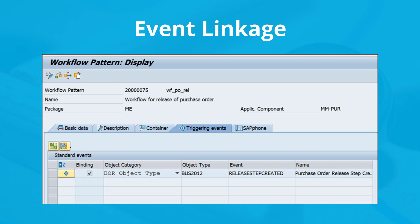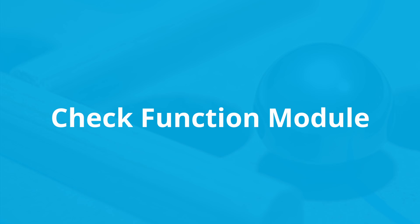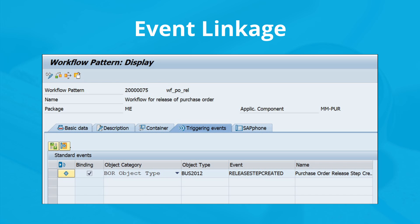This figure shows the event linkage between the workflow and the business object event. If you want to add a custom check to decide whether the workflow should trigger or not, you can use the Check Function Module field. To determine the workflow template dynamically, you can use the Receiver Type Function Module field. The details of these two function modules are shown in the figure.